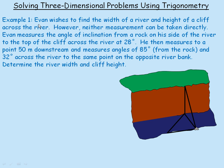In the first of two examples, Evan wishes to find the width of a river — the blue part of the diagram — and also the height of a cliff in a grassy area above. Evan cannot measure either of these distances directly, but he can make enough measurements to use trigonometry to find how far it is across the river and how high the cliff is, inaccessible as it may be on the opposite side.